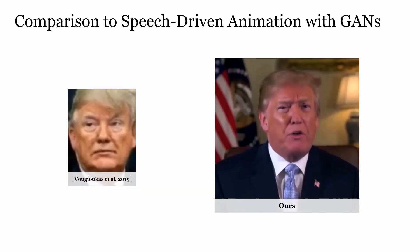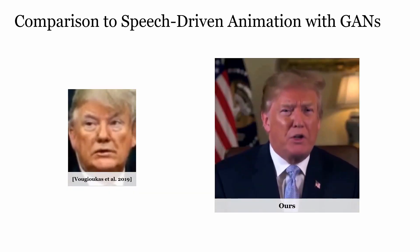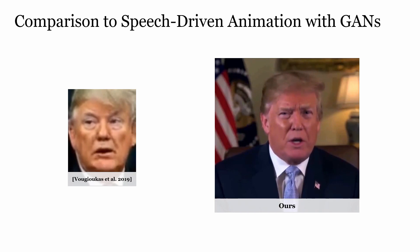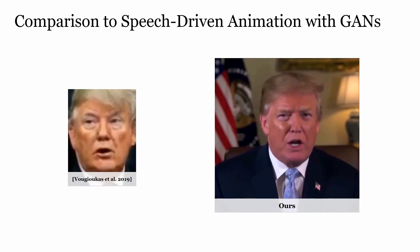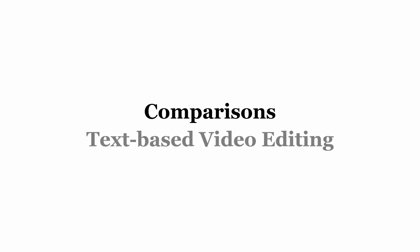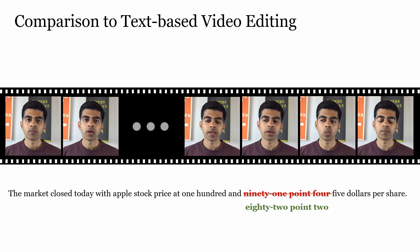The world is a very complicated place, but not for long, because this segment is called Nice, Not Nice. Text-based video editing allows to edit single words in a talking head video. It only synthesizes the video sequence of the new text, while neural voice puppetry synthesizes the entire video.